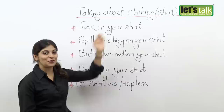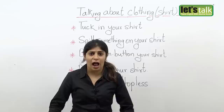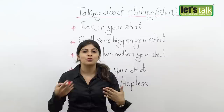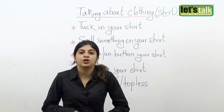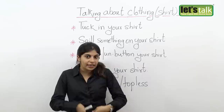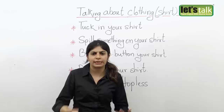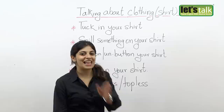The first one here is 'tuck in your shirt.' Many people either keep their shirt out to give a casual look, or to dress formally they tuck in their shirt — basically putting their shirt into their pants. To give a more formal look, they then tighten their pants with a belt. That is called tucking in your shirt.